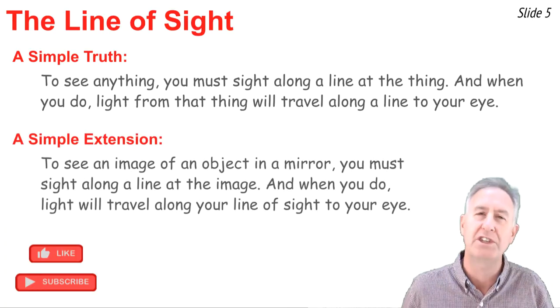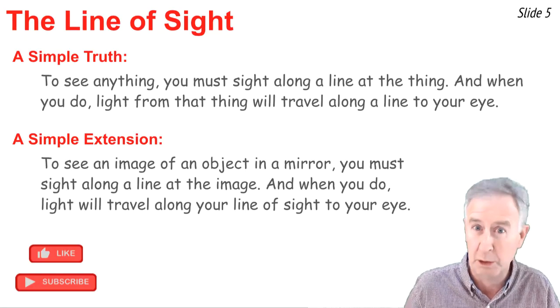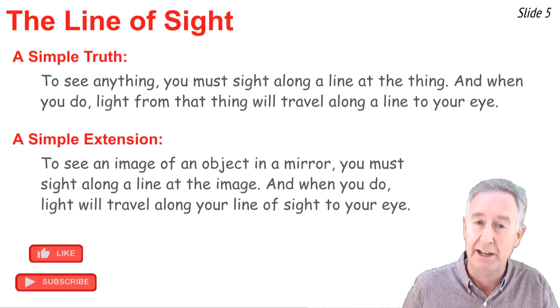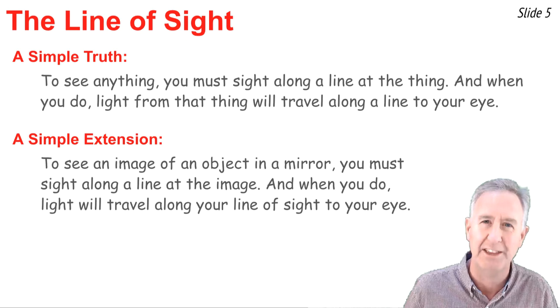There's a simple extension to this idea. That if you want to see the image of an object in a mirror, which is what a good deal of this unit is going to be about, then you have to sight along a line at the image of the object. And when you do, light will come from the mirror to your eye as you're sighting at the image.